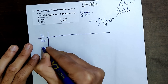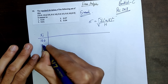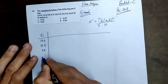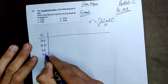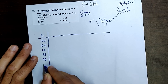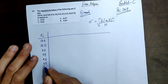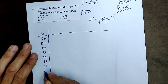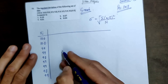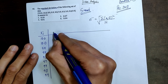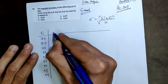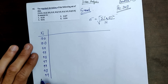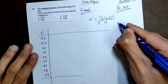We will make a table for XI. We write all the terms: 10.0, 10.0, 9.9, 9.9, 9.8, 9.9, 9.9, 9.9, 9.8, and 9.9. Then we will calculate its mean, X-bar.